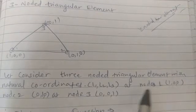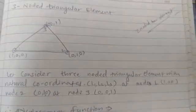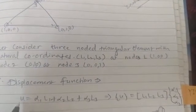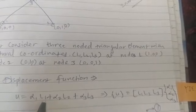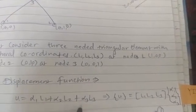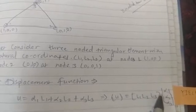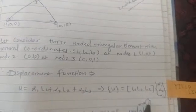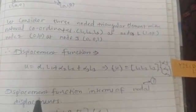Let's consider a three-noded triangular element with natural coordinates L1, L2, L3. At node 1: (1, 0, 0); at node 2: (0, 1, 0); at node 3: (0, 0, 1). These are the coordinates at the respective nodes. As in the previous problem, we first find the displacement function, which takes the generalized form: u = α1·L1 + α2·L2 + α3·L3. We write this in matrix form as {u} = [L1, L2, L3]{α1, α2, α3}, calling this equation number one.